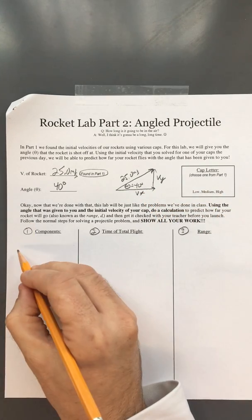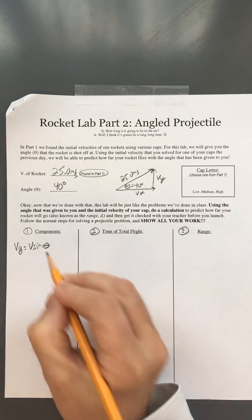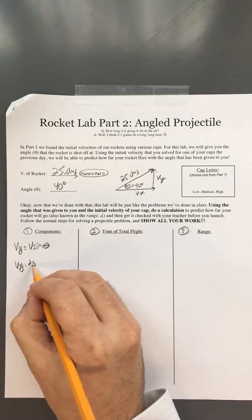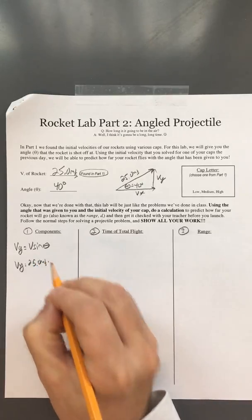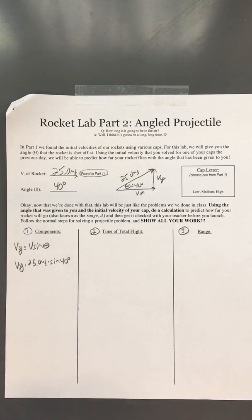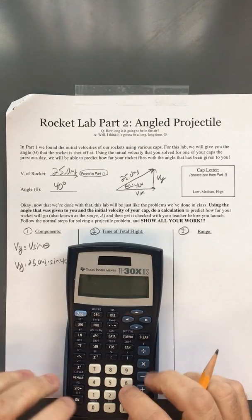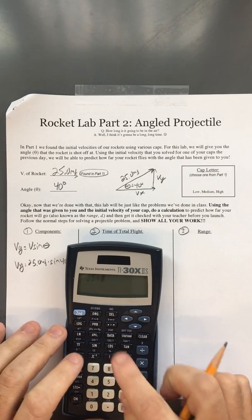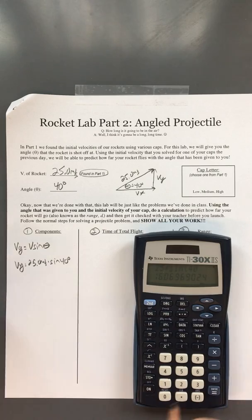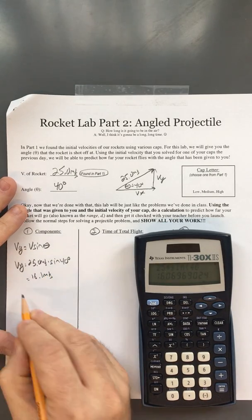The trig identity for the vertical component is Vy equals V sine theta. So Vy equals 25.0 meters per second times sine of 40 degrees. I put that in my calculator, making sure it's in degree mode, and I get 16.1 meters per second for Vy.